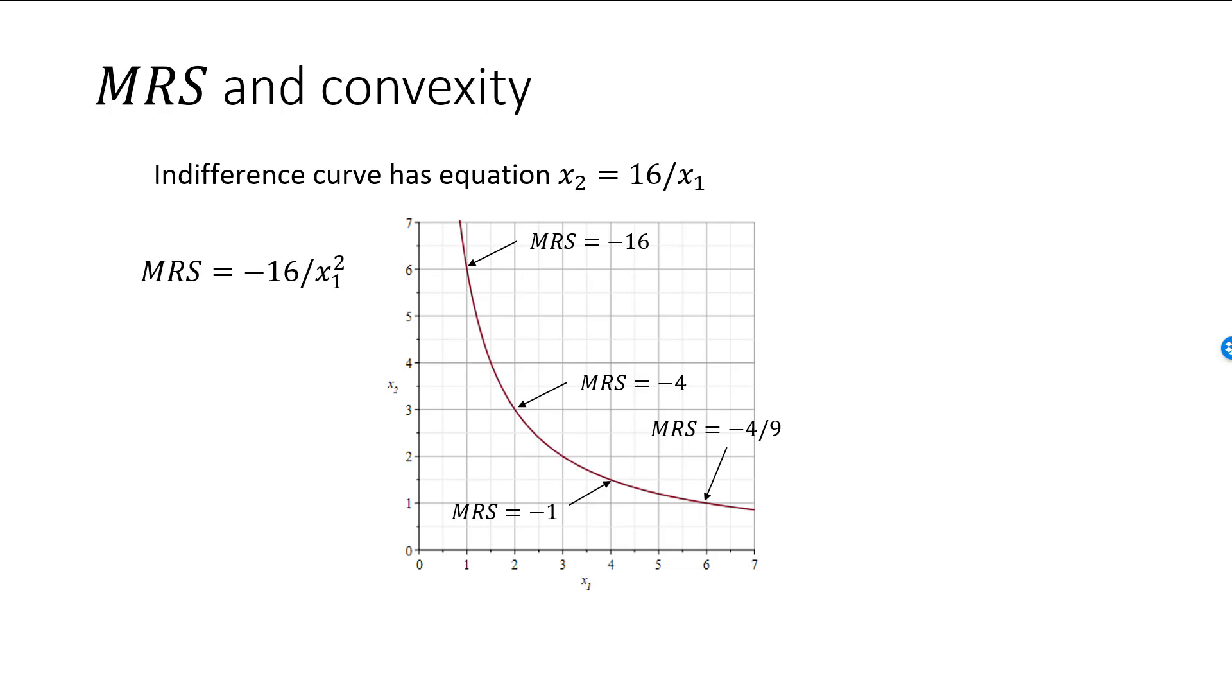As you can see, MRS increases as we move to the right. The absolute value of MRS—16, 4, 1, and 4 over 9—decreases as we move to the right, both consistent with the curve getting flatter.